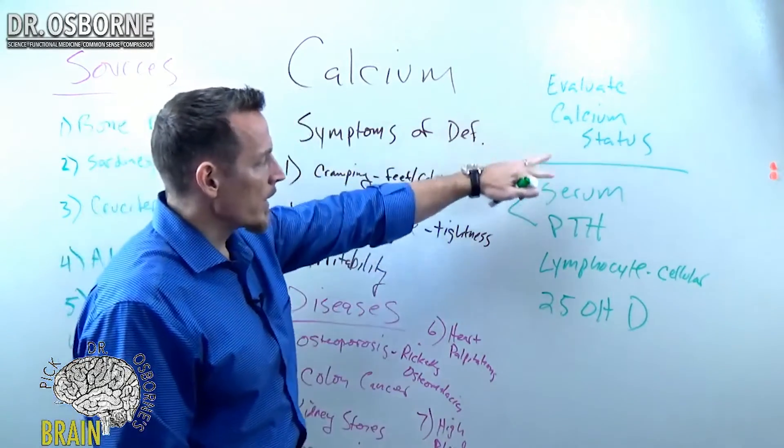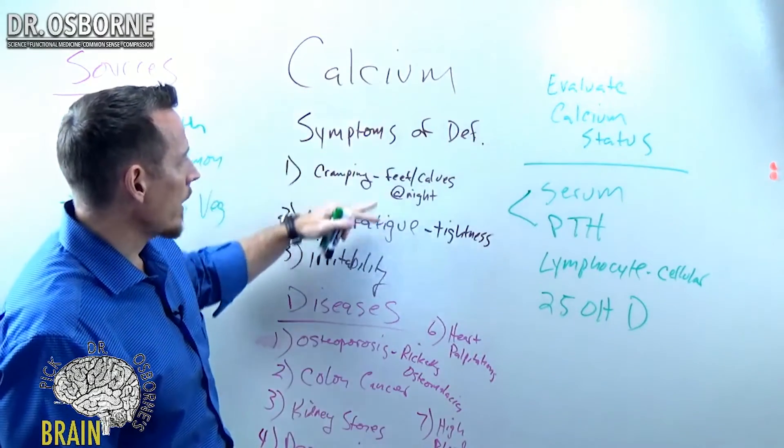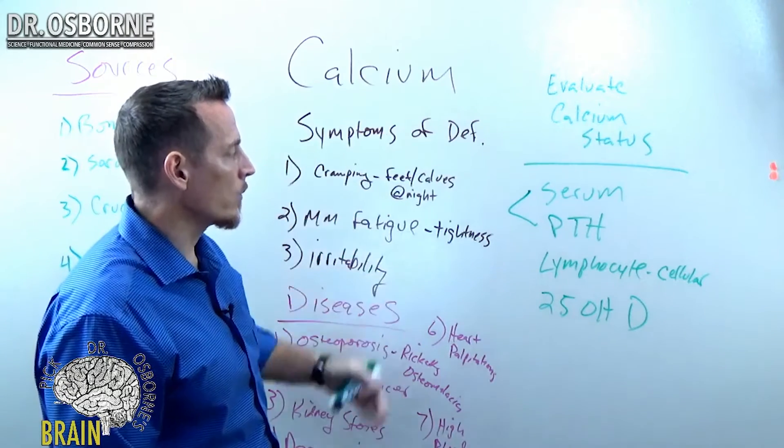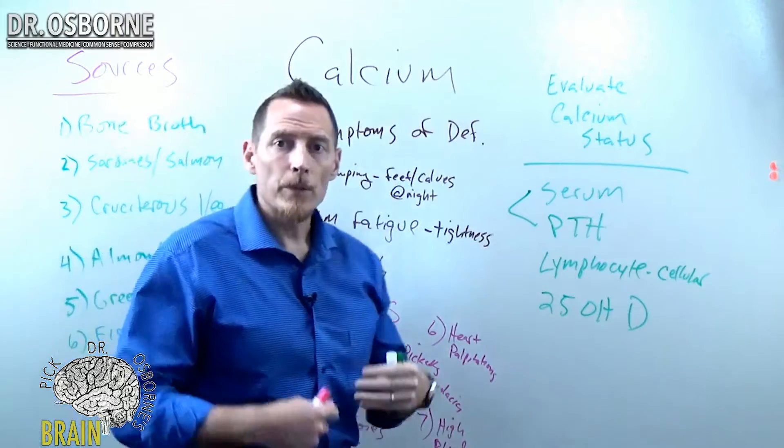So these would be some of the standardized tests we'd run. We'd also want to look at a lot of these types of things and see what may be going on with an individual as well. And then of course, we want to know about their gut, their gut history.